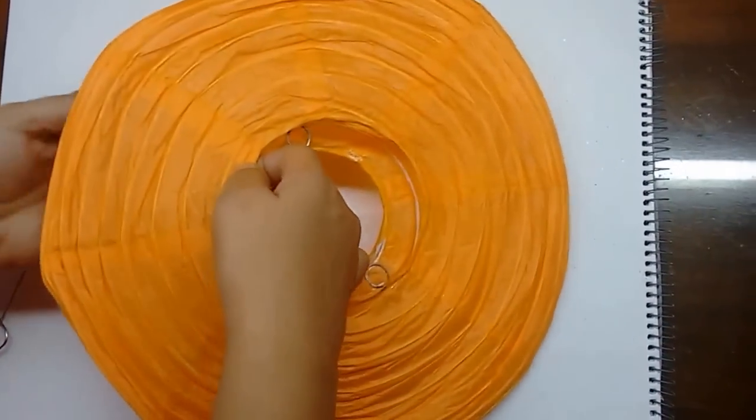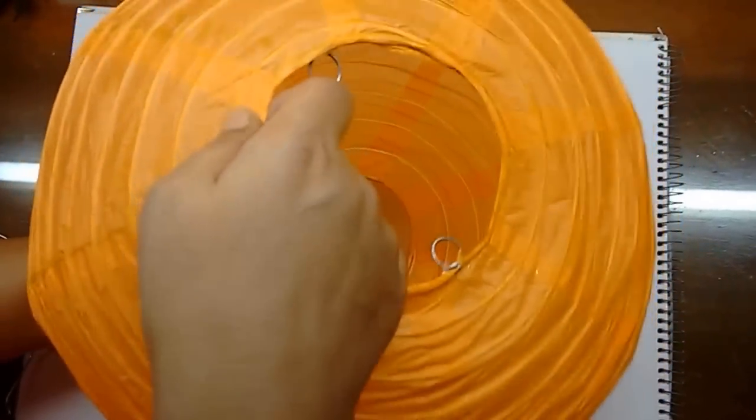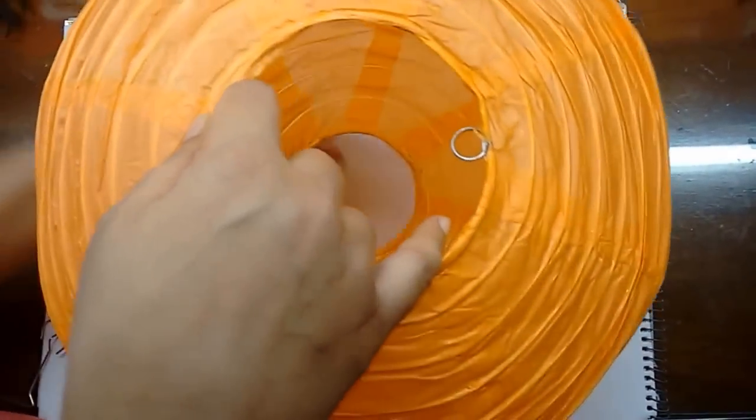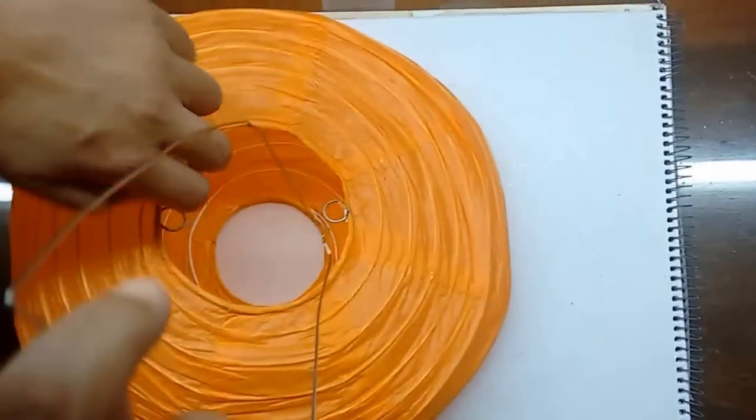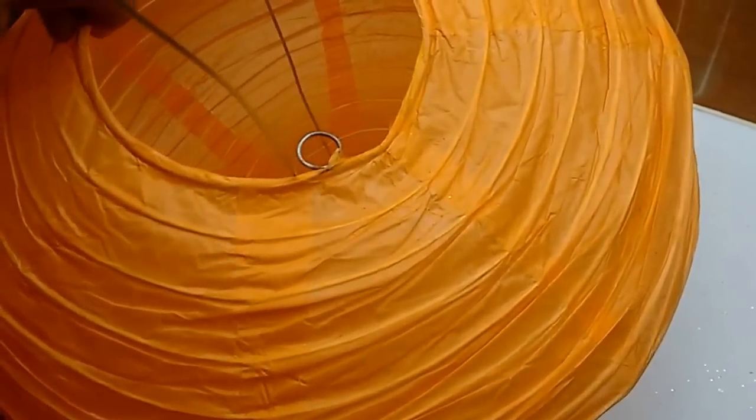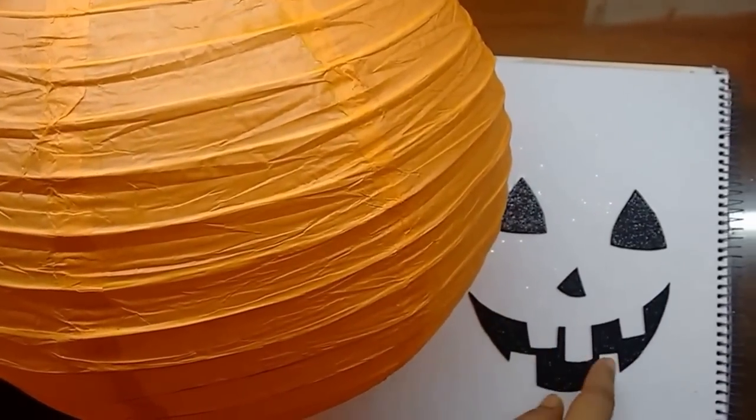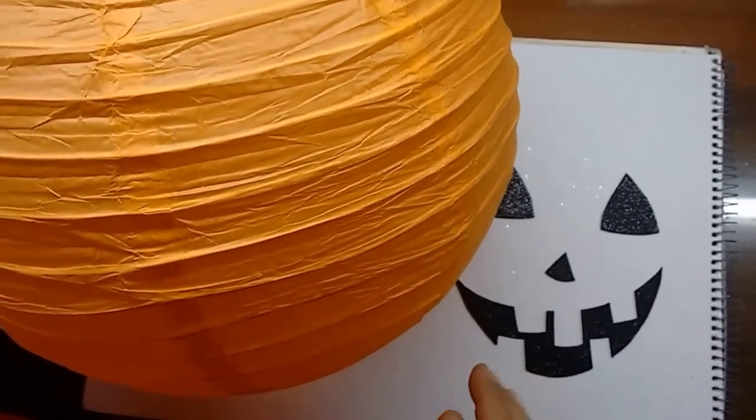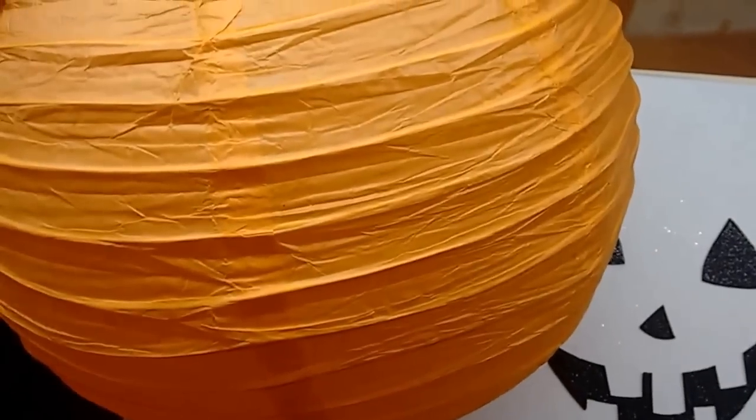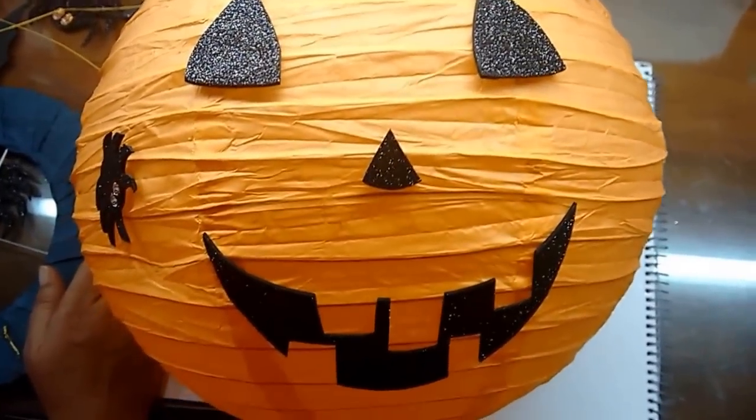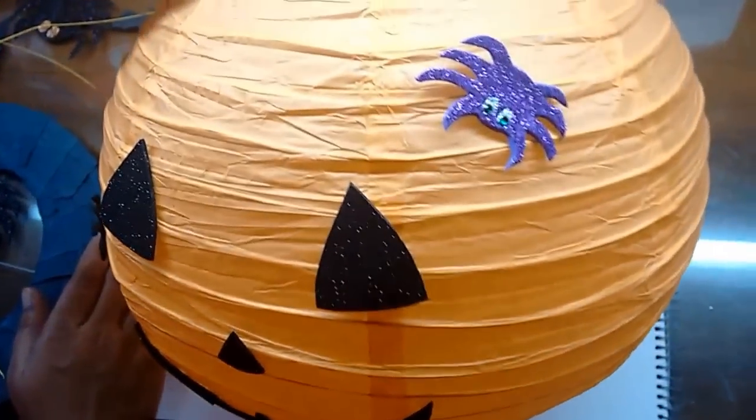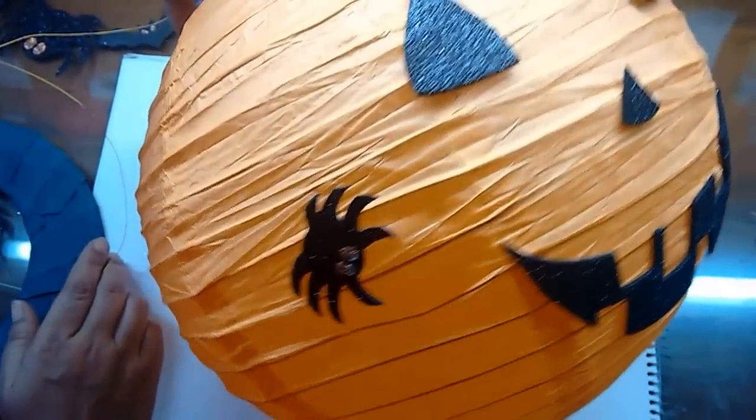Now open the lantern and follow the instructions given on the pad. Just insert this and make the lantern. Stick the eyes, nose, and mouth that we made for the jack o'lantern on the paper lantern. So take the eyes and apply glue at the back and stick it. This is how it will look after I stuck the face. I have stuck a couple of spiders also on it like this.